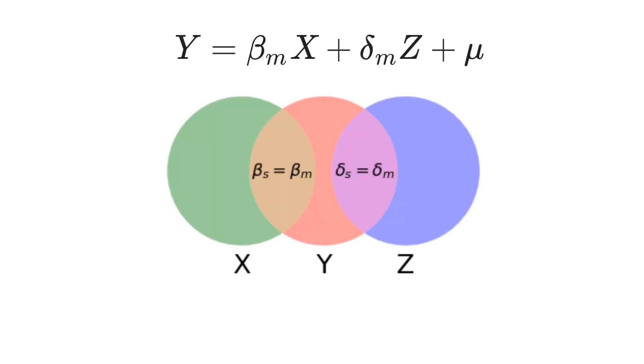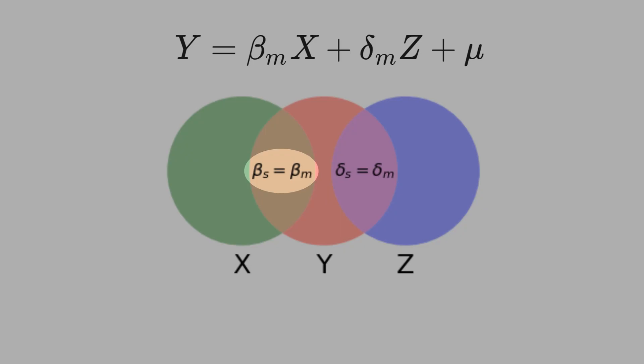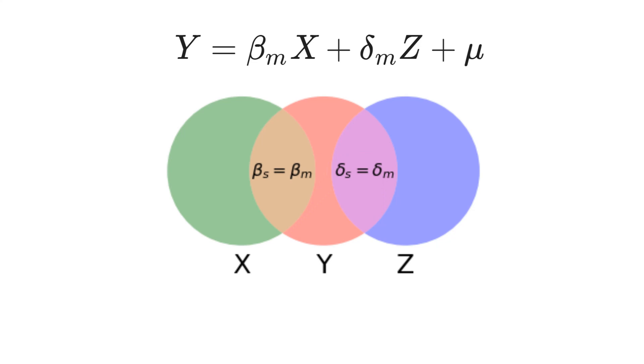See the Venn diagram below. Beta_s equals beta_m and delta_s equals delta_m. This is a special case where there is no intersection between X and Z. If X and Z are independent, then the correlation between X and Z will be zero. The Venn diagram is not a formal definition of independence—it's just a tool to help your intuition.